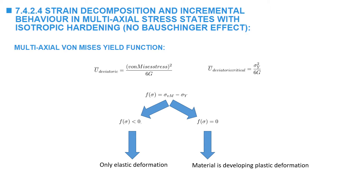Experimental observations in metals indicate that yielding occurs when the deviatoric strain energy, which is equal to von Mises stress squared divided by 6G, reaches a critical value. The critical value can be obtained from a uniaxial state of stress, where the deviatoric strain energy equals sigma yield squared divided by 6G. Setting these equal implies that yielding occurs when the von Mises stress equals the yield stress. The yield function can therefore be written as the von Mises stress, sigma von Mises, minus sigma yield.